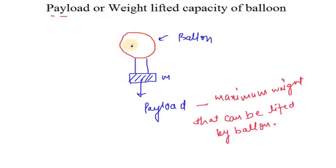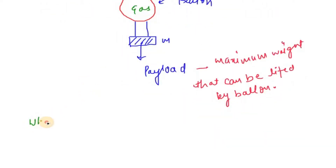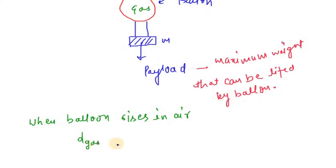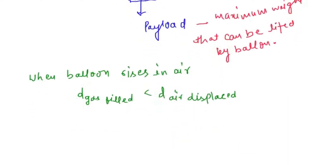When a balloon rises in air, the density of the gas filled inside the balloon is less than the density of the air displaced. So when the density of gas inside is less, or when the density of displaced air is more, the balloon rises.